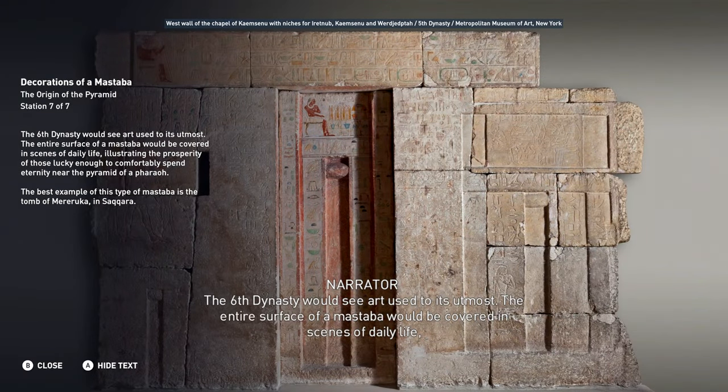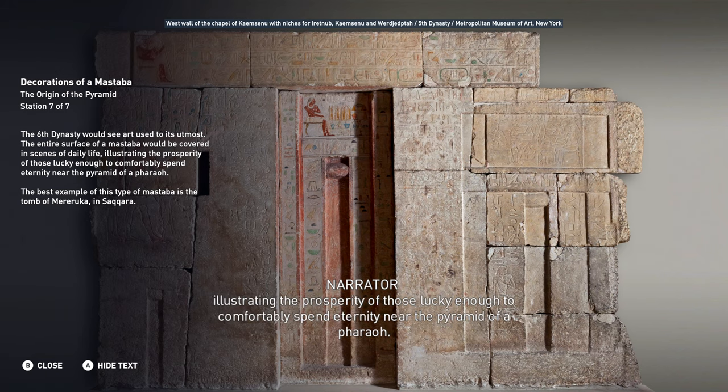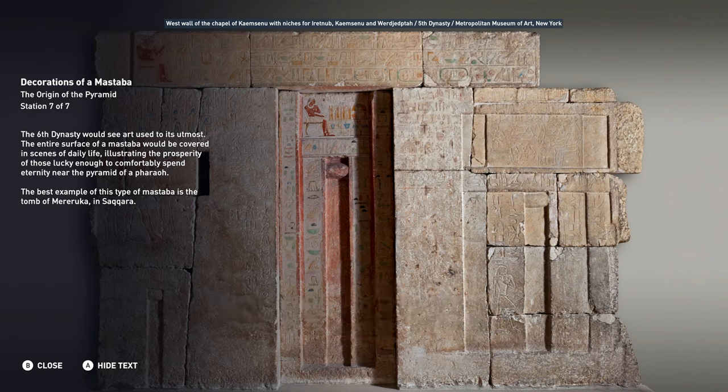The 6th Dynasty would see art used to its utmost. The entire surface of a mastaba would be covered in scenes of daily life, illustrating the prosperity of those lucky enough to comfortably spend eternity near the pyramid of a pharaoh. The best example of this type of mastaba is the tomb of Mararuka in Saqqara.